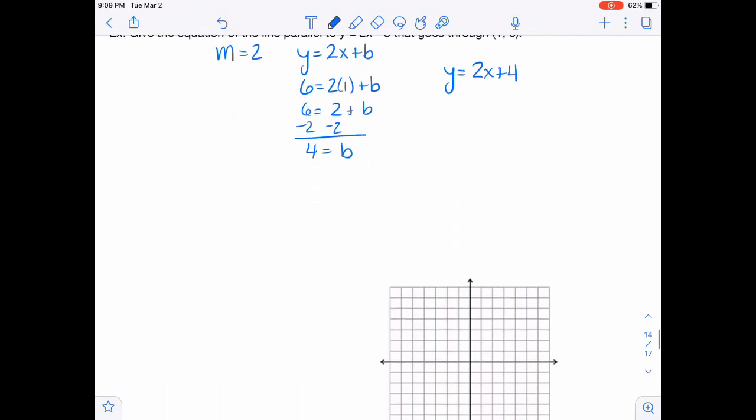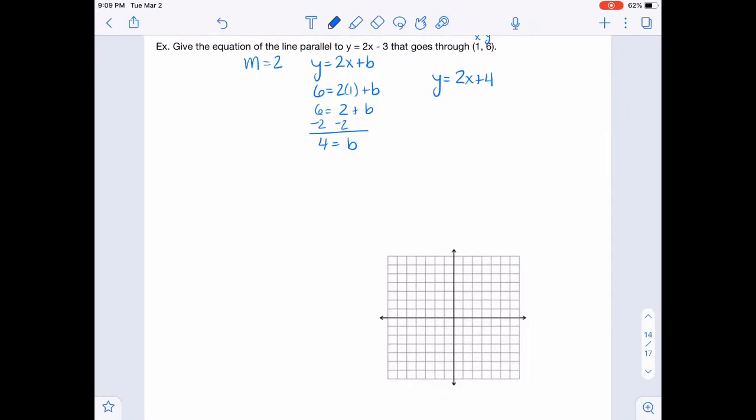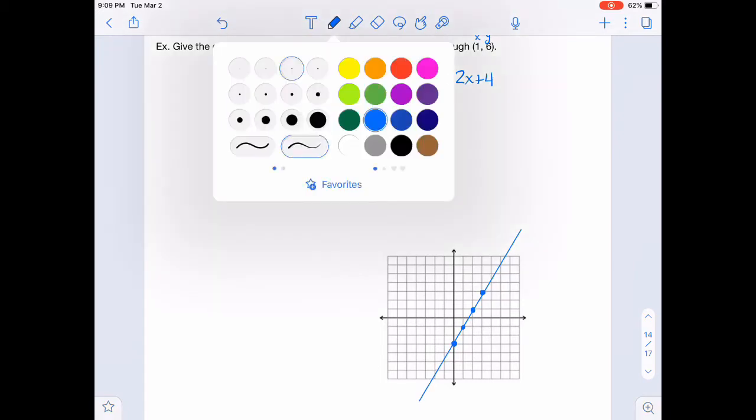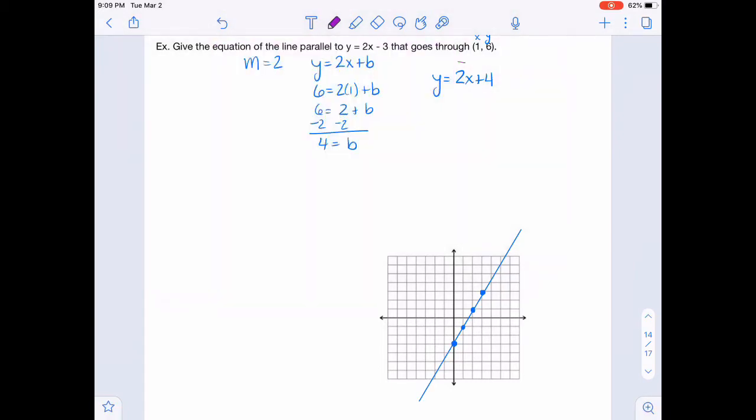Now if we graph both of those, if we graph the one that we were initially given and the new one, we will see that they are parallel. So for the first one, I'm going to go down 3, my y-intercept is a negative 3 there, and I'll go up 2 and over 1, and I'll do that a few times. So I have lots of points to connect.